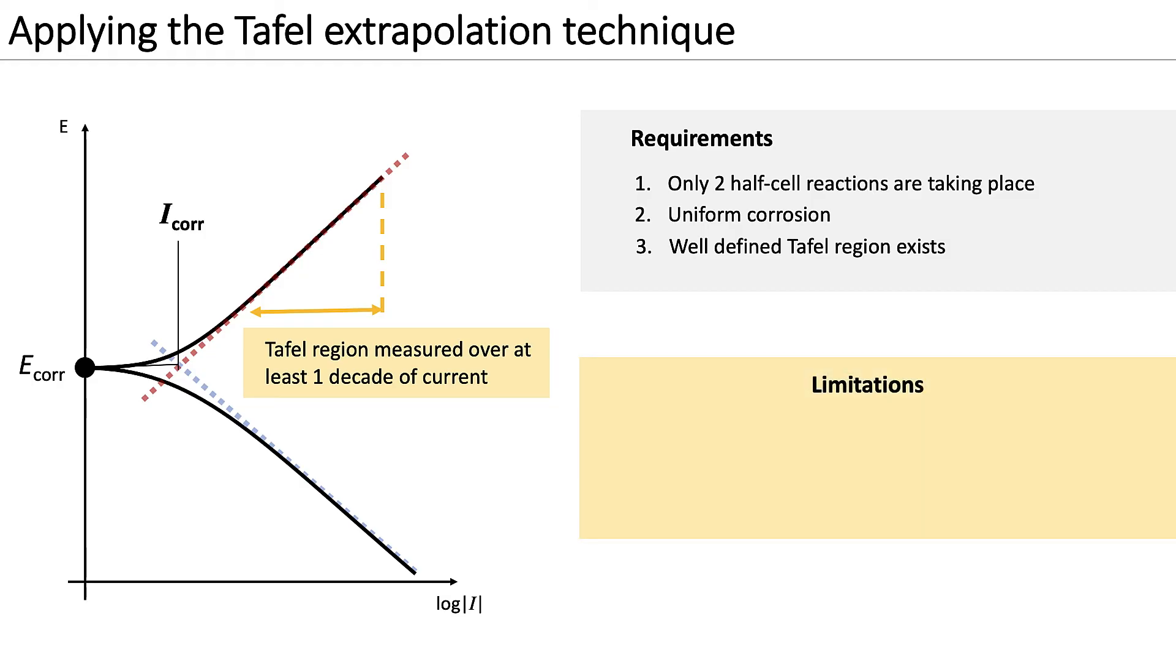An important limitation of the Tafel extrapolation technique is that the measurement may modify the system under study. During the extensive polarization away from the corrosion potential, relatively high currents are applied, which means that the environment and the metal may be altered during the acquisition of the curve. This should be taken into account in the experimental design and in the interpretation of results.